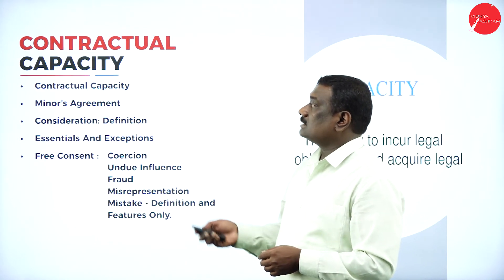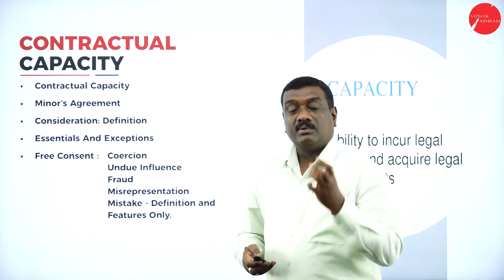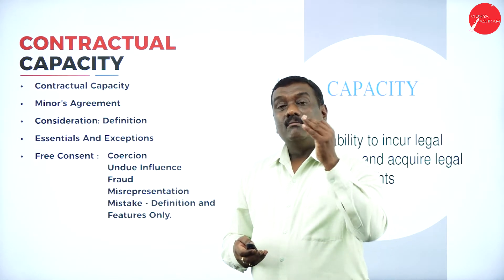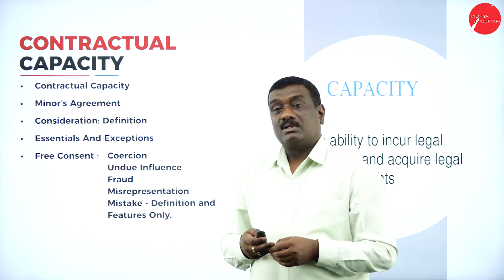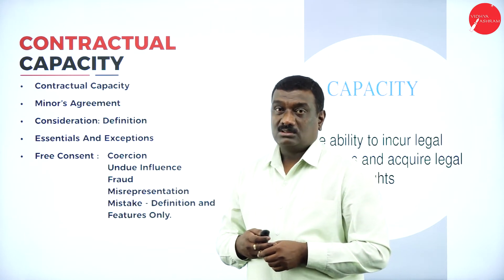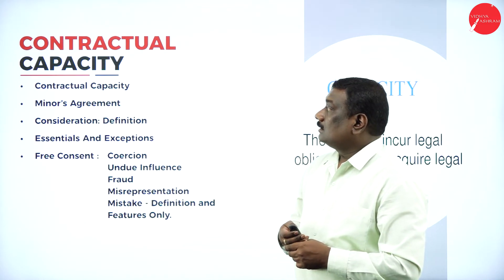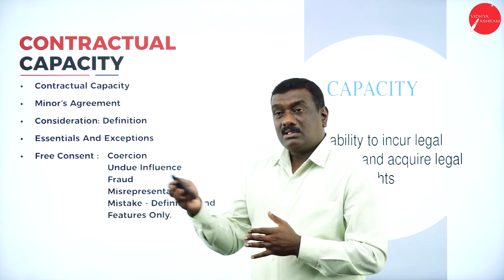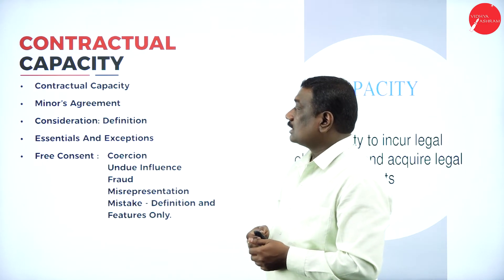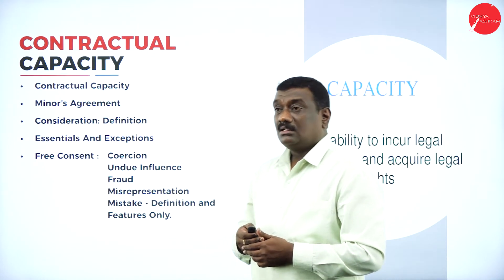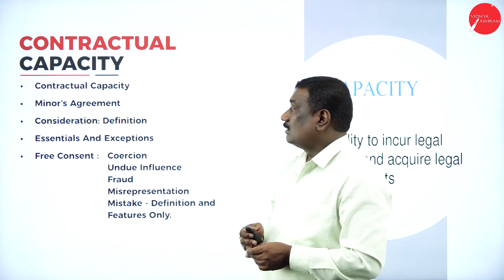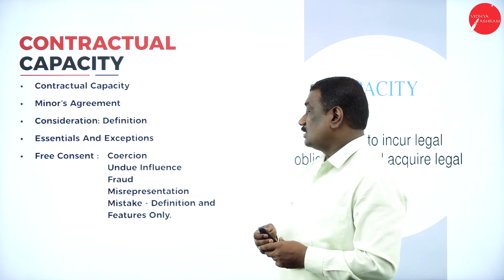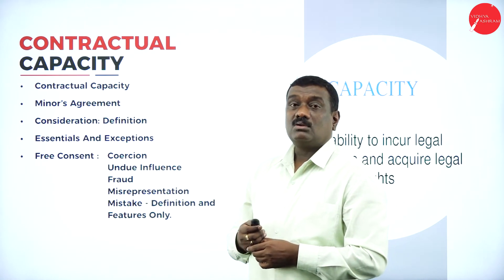The next unit is Contractual Capacity. A person who wants to enter into a contract should be competent — he should be a major who has attained the age of 18 years, be of sound mind, and not be disqualified by any law. Under this unit you will also study minor's agreements, consideration — its definition, meaning, essentials, and exceptions — then free consent, including coercion, undue influence, fraud, misrepresentation, and mistake.